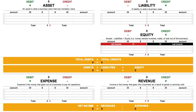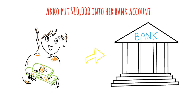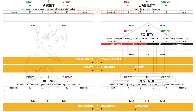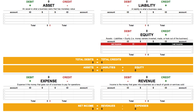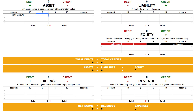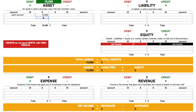Let's try using some debits and credits to increase and decrease accounts. Let's say that Akko put $10,000 into her bank account. A bank account is an asset, since it's something we own that has monetary value, so we increase the asset by debiting it. And because we debited an account, we need to credit one as well. Remember, debits equal credits.